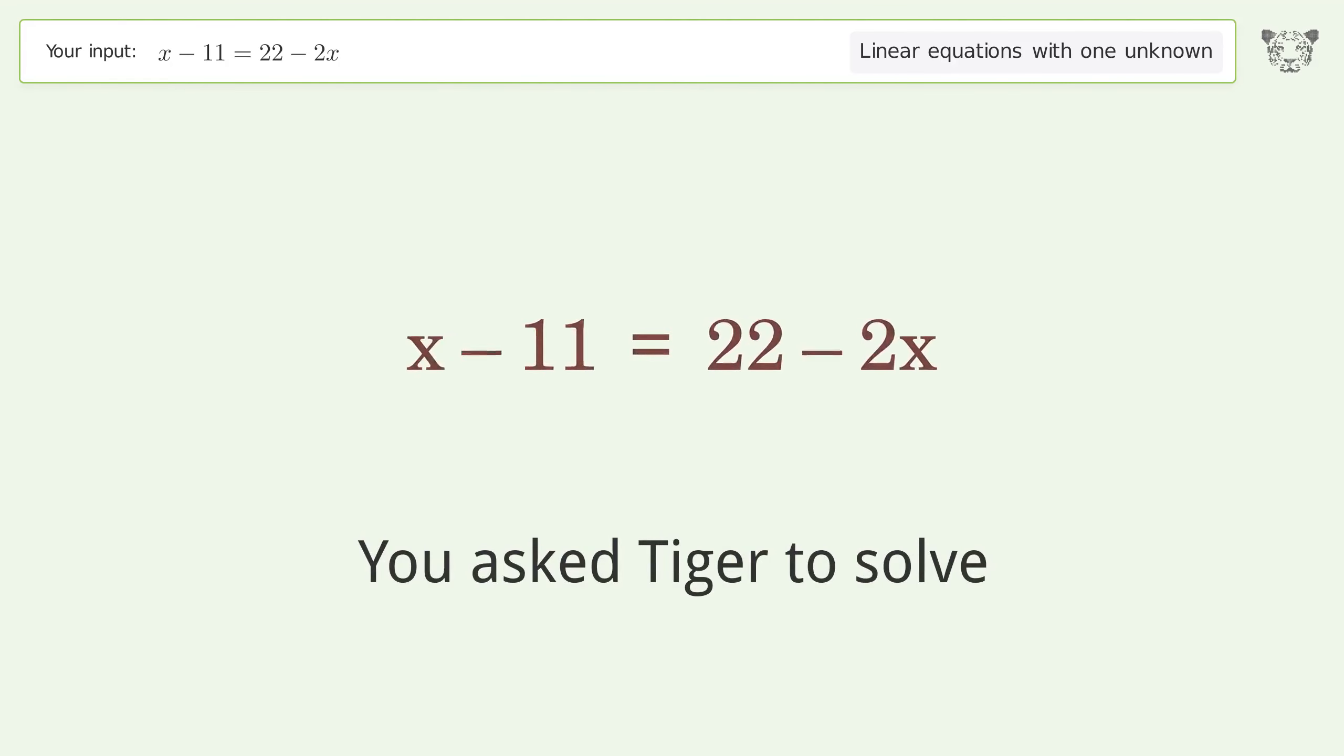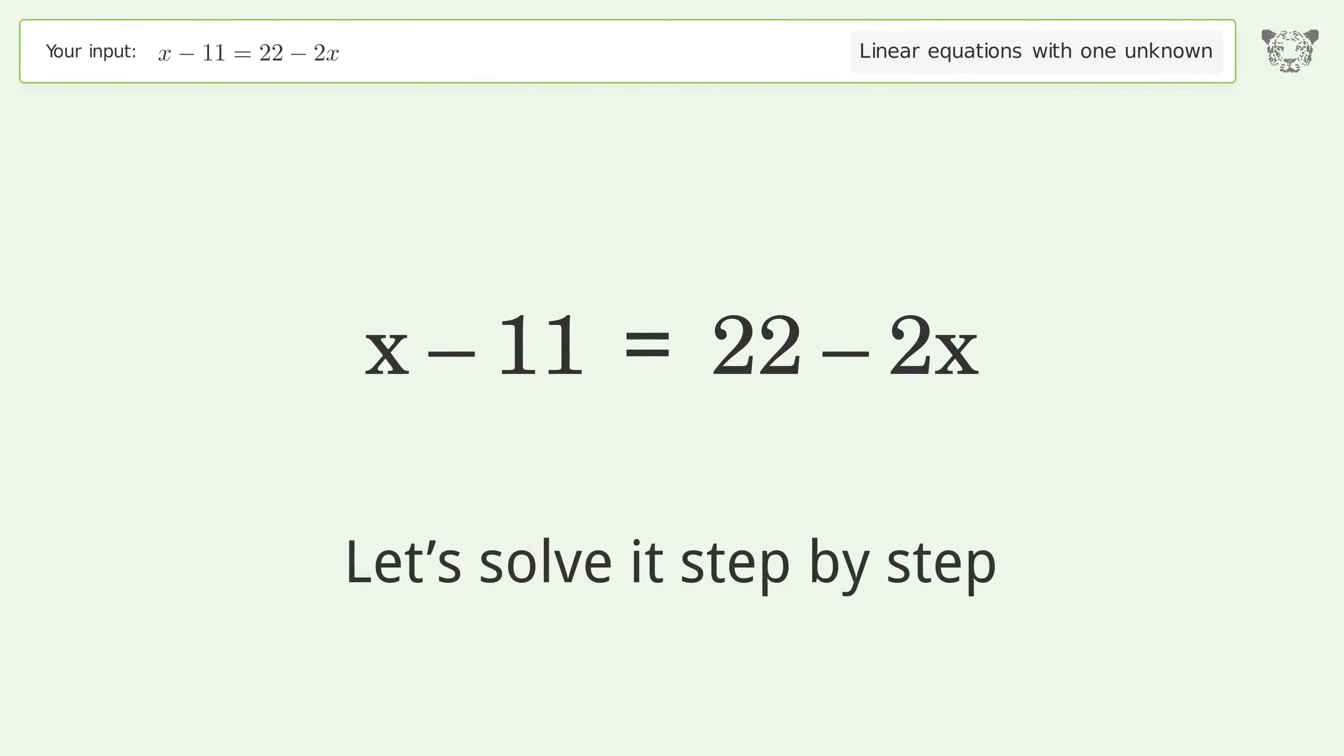You asked Tiger to solve. This deals with linear equations with one unknown. The final result is x equals 11. Let's solve it step by step.